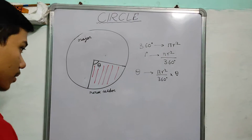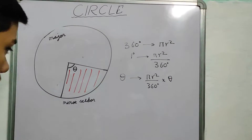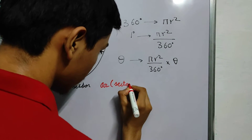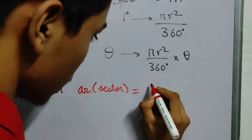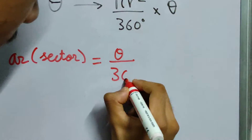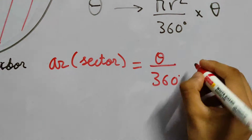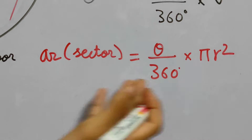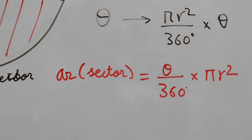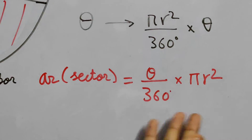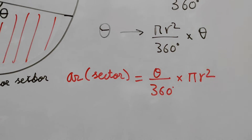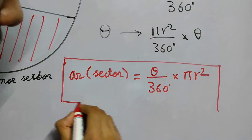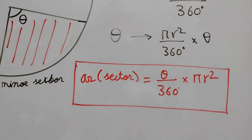Let me write this in a nicer format. The area of a sector is (theta/360)·πr². This is easier to remember because theta/360 represents theta out of the total angle 360 degrees. That is the formula for the area of a sector.